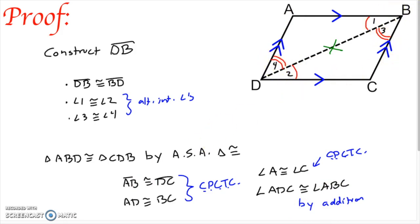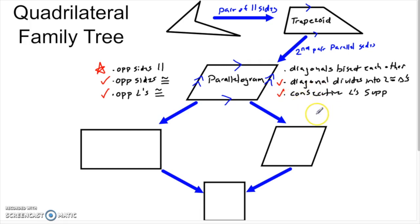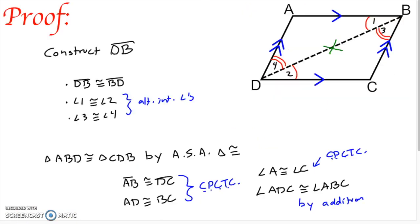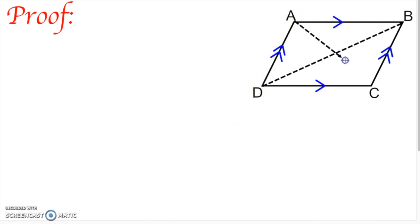Keeping track of what we have: the definition, opposite sides congruent, opposite angles congruent, consecutive angles supplementary — we didn't need to prove that from the parallel lines. We still need to prove that the diagonals bisect each other, and for that we need a different picture with both diagonals in it.